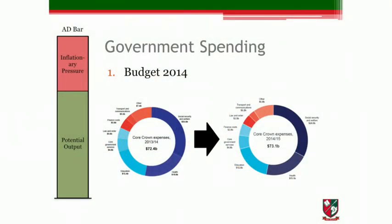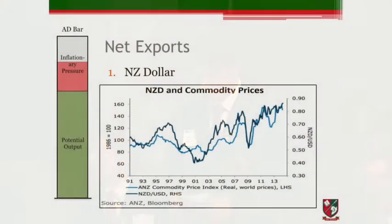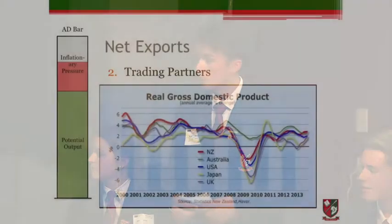Now government spending. The national government has announced that it will increase spending to $73.1 billion in its next budget, and we estimate the government will continue to increase spending over the next few years. Next, let's look at imports and exports. We expect the New Zealand dollar to remain elevated as appreciations from rises in the OCR make up for depreciations due to falling commodity prices. This will increase imports, whilst our key export industries are buffered by the high commodity prices.